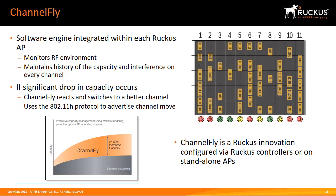Initially, in the first 30 to 60 minutes, there will be more frequent channel changes as ChannelFly learns the environment. However, once an AP has learned about the environment and which channels are most likely to offer the best throughput potential, channel changes will occur less frequently unless a large measured drop in throughput occurs. ChannelFly can react to large drops in throughput capacity in as little as 15 seconds, while smaller drops may take longer to react to.